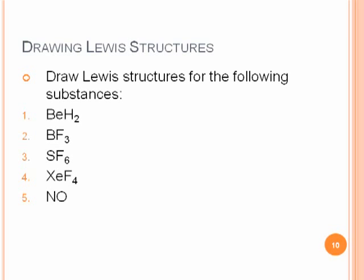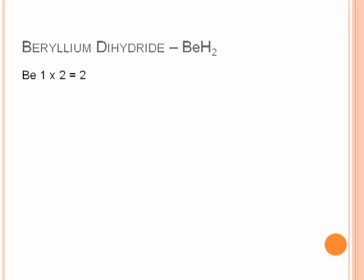We're going to draw Lewis structures for these substances as examples: beryllium dihydride, boron trifluoride, sulfur hexafluoride, xenon tetrafluoride, and nitrogen monoxide. We'll draw each of those to illustrate our points for those rules.